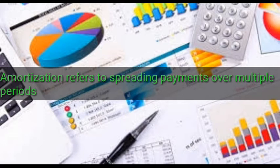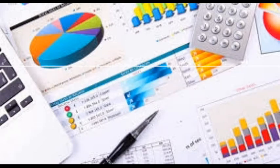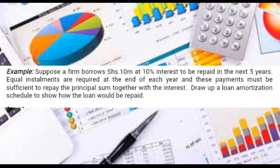We are going to look at how to amortize a loan using present value. Suppose a firm borrows shillings 10 million at 10 percent interest, to be repaid in the next five years. Equal installments are required at the end of each year — that is an annuity — for five years, and these payments must be sufficient to repay the principal sum together with the interest.